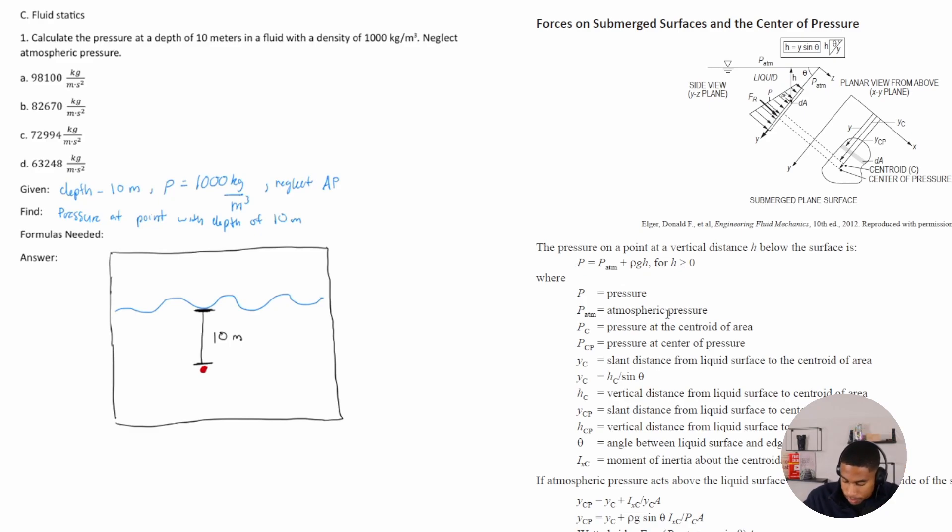Okay, so let's solve, right? We have, I believe, everything that we need. So, P is equal to P ATM plus rho G H. All right. So, we're neglecting atmospheric pressure, so that just goes away.